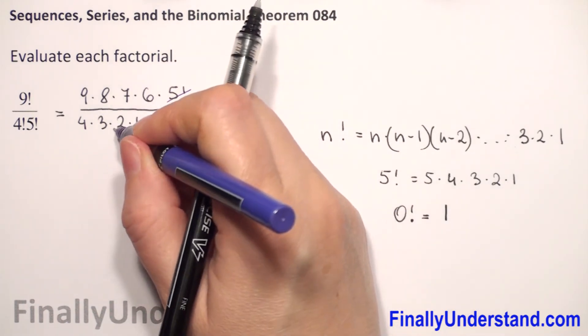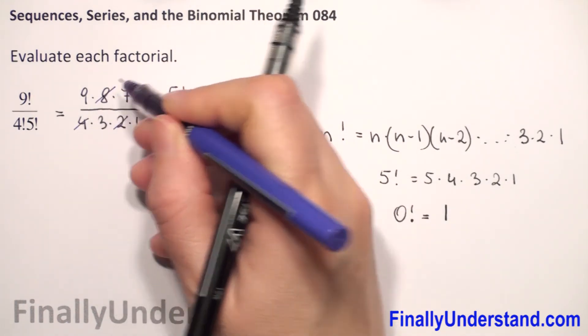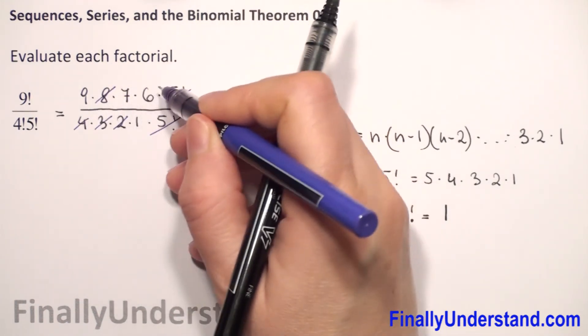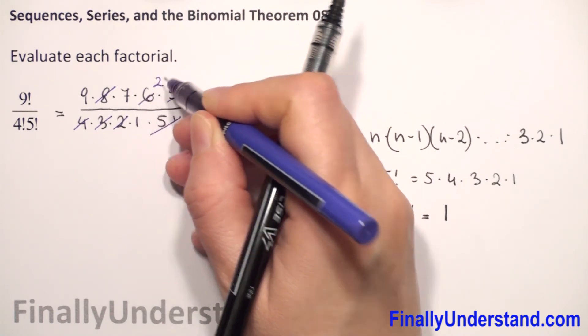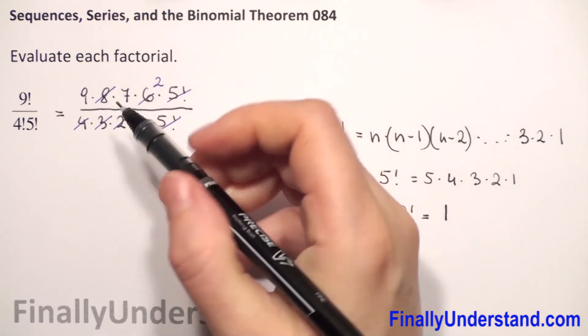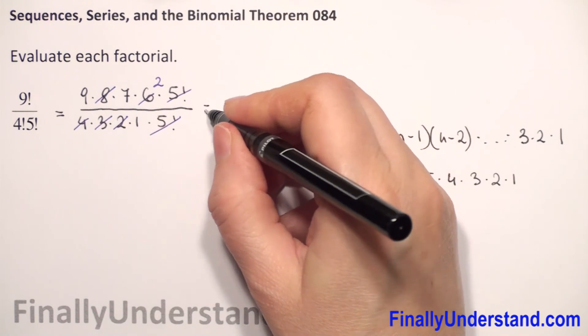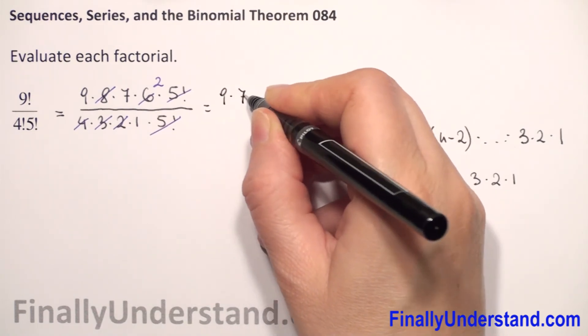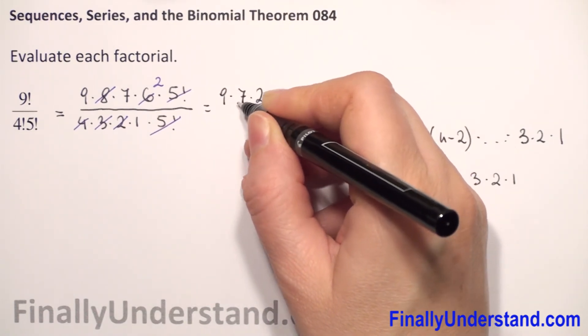2 and 4 give me 8. With 8 and 3 I can reduce with 6, so it would be 2. Now we have only 9 times 7 times 2 over 1.